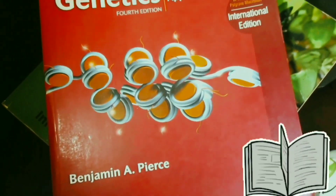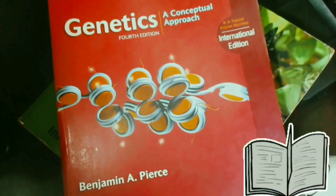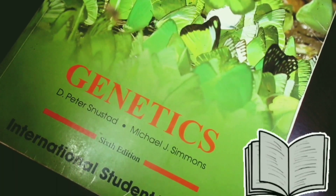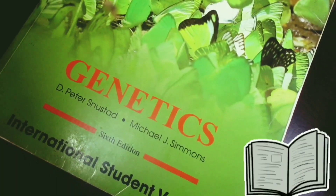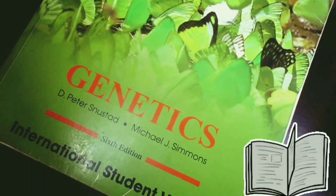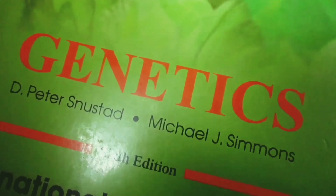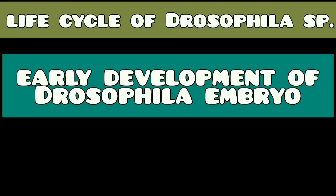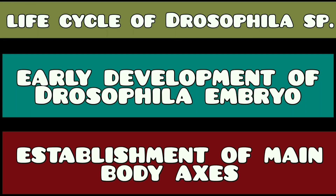The reference study material used for making this video is the book of Benjamin Lewin and Snustad-Simmons. You may go through such books for lucid conceptual knowledge about developmental genetics. In this video you are going to learn about the brief life cycle of Drosophila and the early development of the Drosophila embryo, and the establishment of main body axes by egg polarity genes.